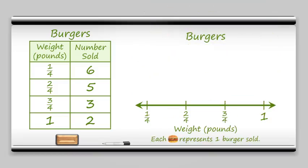And it's also nice sometimes to have a key. Now, in this key, I said that each of our burgers represents one burger sold. Typically, you see these as x's or as dots. But I just thought a burger would be more fun today.